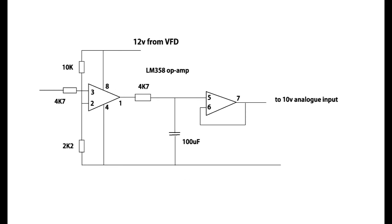The analog signal is generated using this circuit — take a screenshot if you want it. The first stage is a switch which switches between 0 and 12 volts every time the pulse changes. It's aggregated in the middle to give a DC voltage, which is then buffered.